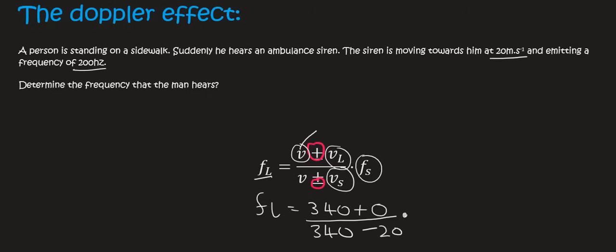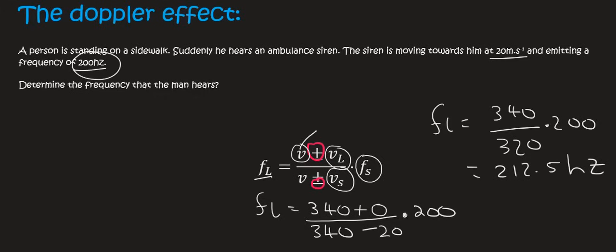So the frequency of the listener equals 340 over 320 multiplied by 200, which gives us an answer of 212.5 hertz. This makes sense because the ambulance is emitting a frequency of 200 hertz.